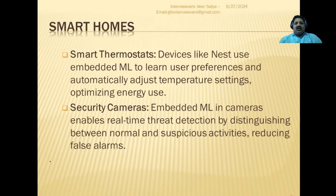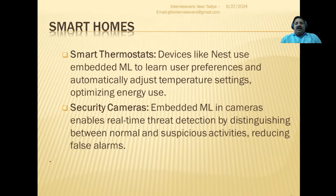Then you have security cameras. Embedded ML enables real-time threat detection, distinguishing between normal and suspicious activities. For example, if a dog is barking in front of your house, the model will recognize that as a normal occurrence and avoid a false alarm. But if there is a burglar, that instance will be in the model and it will detect and report it — not sending false alarms to the user.